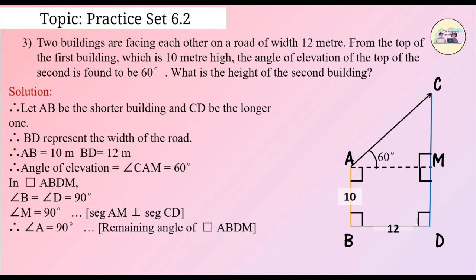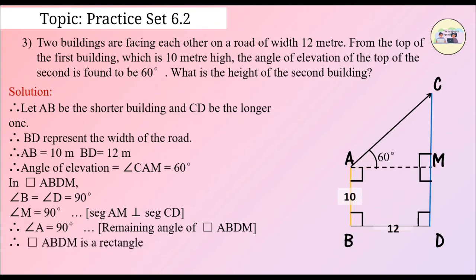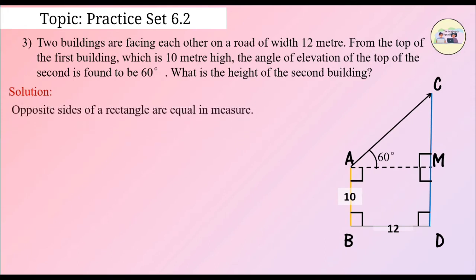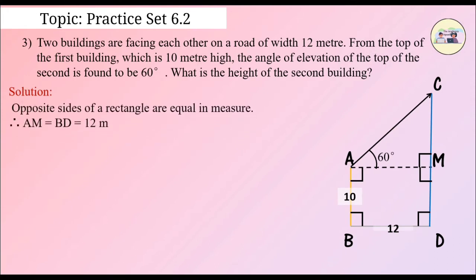By the remaining angles of quadrilateral ABDM, since all angles are right angles, quadrilateral ABDM is a rectangle. Since opposite sides of a rectangle are equal in measure, AM is equal to BD is equal to 12 meters, and DM is equal to AB is equal to 10 meters.